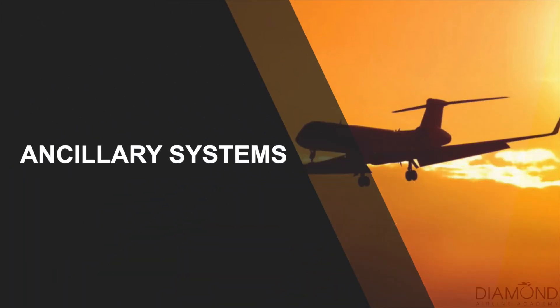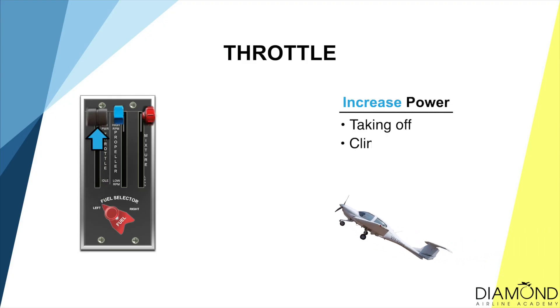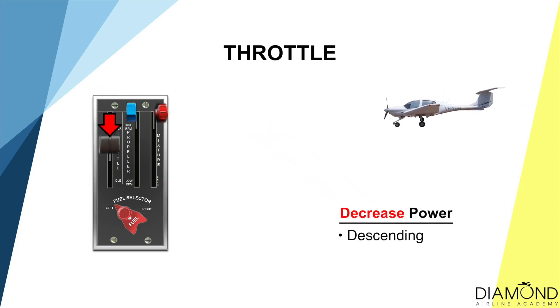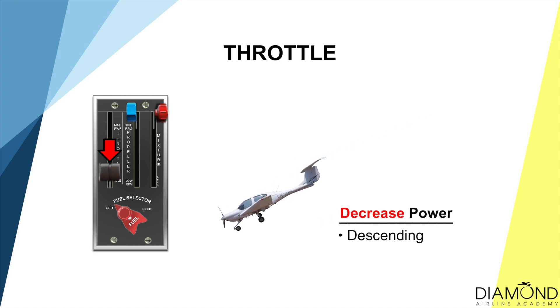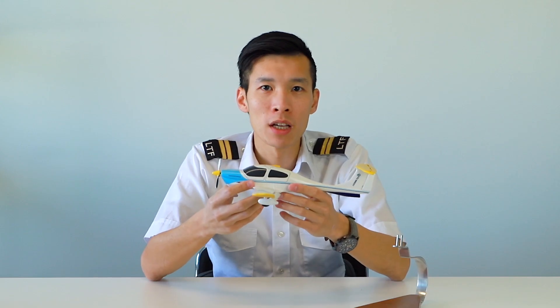We've talked about the three main controls on the aircraft. Now let's look at the ancillary controls. The first is the throttle. A throttle in an airplane is very similar to a car — when we open the throttle, the engine gets more fuel and air and produces more power. When taking off or climbing, we set the throttle to full power. When descending, we pull it back to reduce power, or even idle for a glide descent. Unlike a car, we use our hands rather than feet to control the airplane's throttle. In the DA-40, it's the black lever between the two pilot seats. Next to it is a blue lever — the RPM or pitch lever.